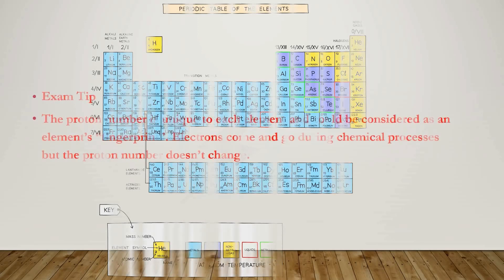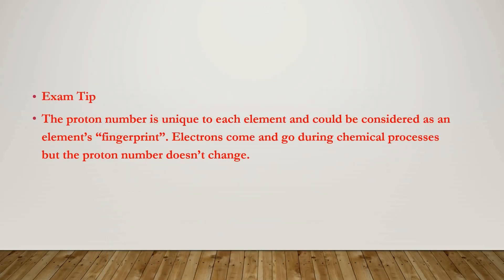Here's an exam tip: the proton number is unique to each element and could be considered as an element's fingerprint. Electrons come and go during chemical processes, but the proton number doesn't change. Electrons are the only subatomic particle that take part in any chemical process or reaction. Knowing the electron arrangement of atoms is extremely important because it defines the entire foundation of chemistry.